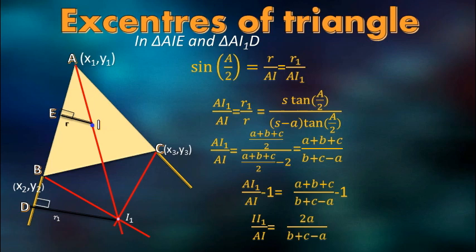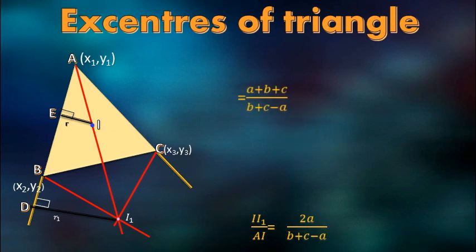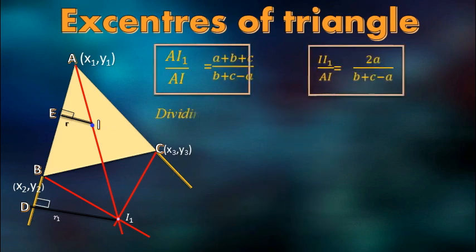Subtracting 1 from both sides, we get a very important and beautiful equation: II1 by AI equals 2A/(B+C-A). Here we got two very important equations: AI1 by AI and II1 by AI. Let's remove all the other stuff and keep these two equations.